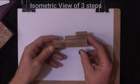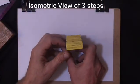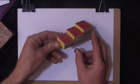So we're going to draw an isometric view of three steps. That's what it looks like from the three sides.